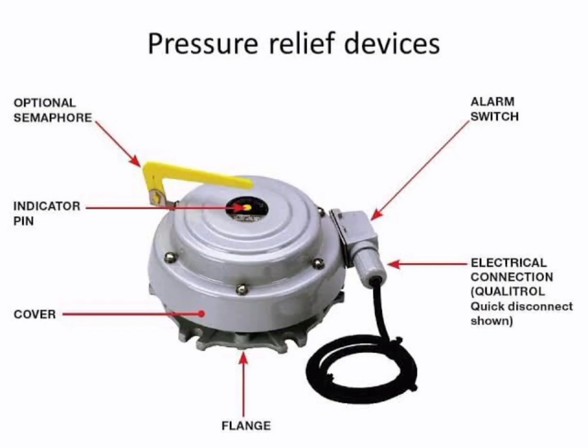A pressure relief valve (PRV) is a type of protection device used to protect transformers from damage caused by excessive pressure. The pressure inside a transformer can increase due to a variety of factors, such as a fault, a change in load, or a change in oil temperature. The PRV is typically installed on the transformer's conservator tank and is designed to detect changes in the pressure inside the tank and respond by releasing the excess pressure to the atmosphere, preventing damage and ensuring safe operation.